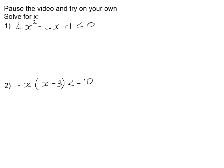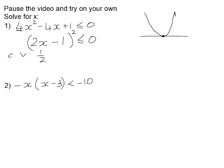In your homework book there are some examples for you to try — please pause the video and try these on your own. For number one, let's find our critical values. This is actually a perfect square trinomial, so it factorizes into the perfect square binomial (2x minus 1) squared. That means the parabola is a smiling parabola, but there is only one critical value, meaning the graph sits on the x-axis at that value. The critical value is one half.